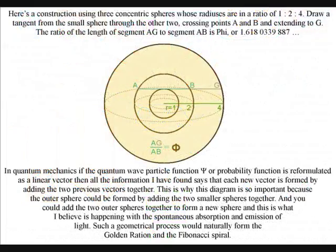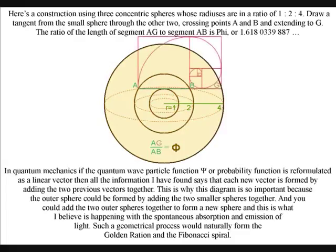In this diagram we have three concentric spheres whose radius are in a ratio of 1, 2, 4. If we draw a tangent line from the small sphere through the other two crossing points A and B and extending to G, the ratio of the length of segment AG to segment AB is the golden ratio.